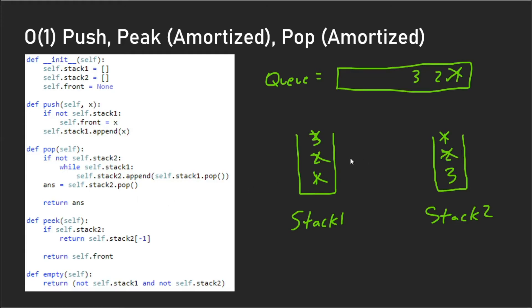So essentially we have these two states. One state is where stack two hasn't been populated yet, and the other state is when stack two has been populated. So we have these if statements here to check whether stack two has been populated.